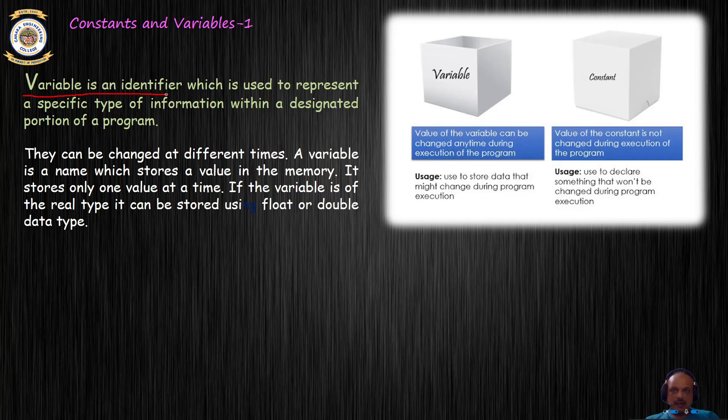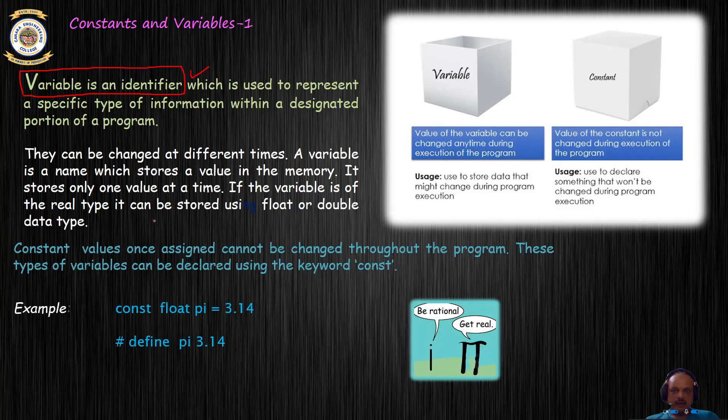Variable is an identifier or a memory block where information can be stored and can be modified in the code at a later stage. Whereas constants are also a memory block in the memory which also get assigned to a value but which cannot be modified in the later part of the C code. So constants have to be initialized as and when they are declared and cannot be later changed in any part of the code.